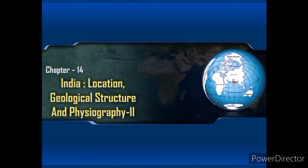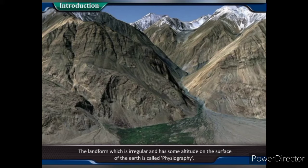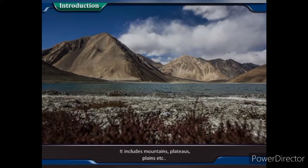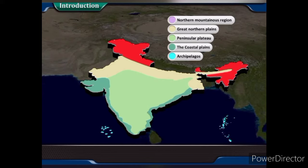Chapter 14: India Location, Geological Structure and Physiography. Introduction: The landform which is irregular and has some altitude on the surface of the earth is called Physiography. It includes mountains, plateaus, plains, etc. On the basis of Physiography, India can be divided into the following physiographic regions.